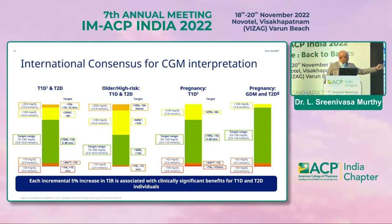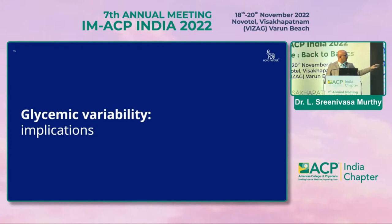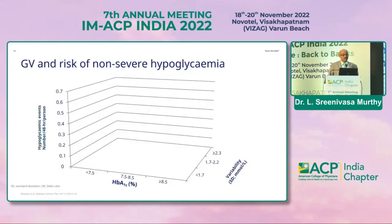Time below range: 4% and 1% respectively — below 70 and below 54 mg/dL. Below 54 is called severe symptomatic hypoglycemia; less than 70 is hypoglycemia. Amplitude of glycemic excursions and time spent outside range are both key topics today. Let us look at why it is important and what the implications are: glycemic variability and risk of non-severe hypoglycemia, which will affect the quality of life of patients.